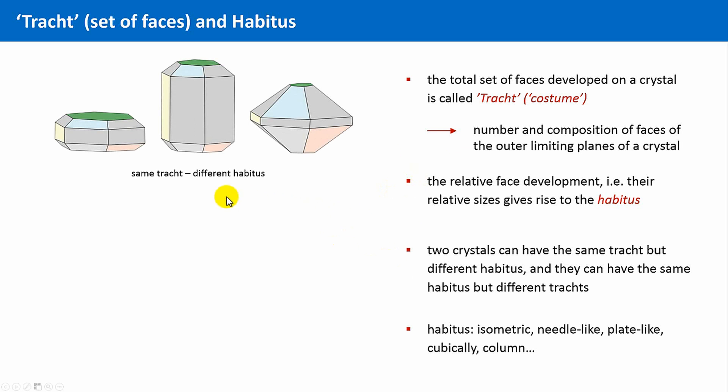Let's look at this example shown here. All these three crystals possess the same set of faces, namely, one hexagonal face on top, then six trapezoids, followed by six rectangles, six trapezoids again, and finally a hexagonal face as the basal face. This composition is identical for this shape, for that shape, and for that too. However, the relative sizes differ considerably.